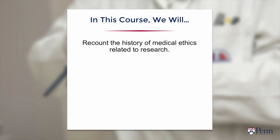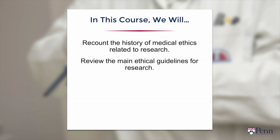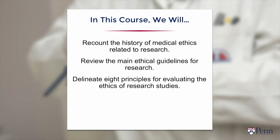This is a course on the ethics of human subjects research. The purpose of the course is to provide a foundation and a framework that will allow you to evaluate research programs and determine whether they're ethical and why they might be unethical. In the course, we're going to recount the history of medical research as well as the history of medical ethics related to research. We're going to review the main ethical guidelines for research, including the Declaration of Helsinki and the Belmont Report. Then we're going to delineate a framework involving eight principles that will allow you to evaluate the ethics of research studies.